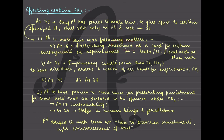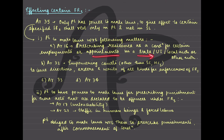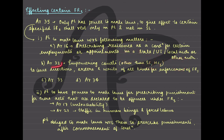Parliament will make law with respect to these matters: Article 16(3), where residence in a state can be prescribed as a condition for certain state-specific employment; Article 32, which empowers the courts to issue writs. Under fundamental rights, when your rights are not given to you, you can move to the Supreme Court or High Court directly. But under Article 35, Parliament has an additional power — it can also empower lower or subordinate courts to issue any writ to enforce fundamental rights.